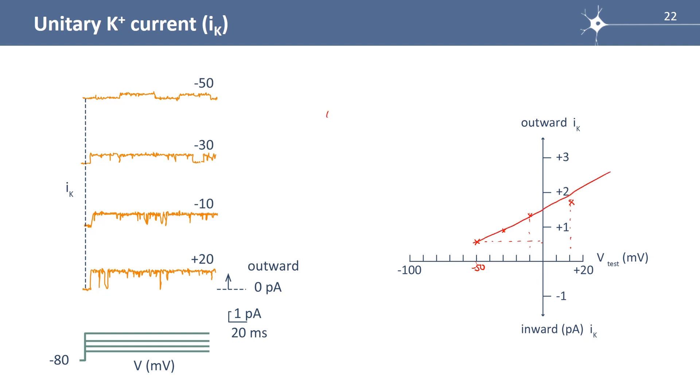Remember the equation, it's IK, it's a lower case I. IK equals gamma K, the conductance of the potassium channel, multiplied by the driving force.